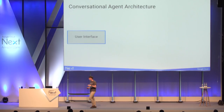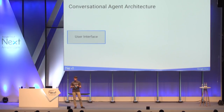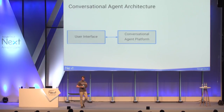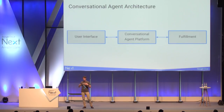Let's look at the basic architecture. This architecture works for both voice chatbots — like Amazon Alexa, Microsoft Cortana, or Google Home — and for text bots integrated on your website or mobile application. The three building blocks are: the user interface, the conversational agent platform, and the fulfillment side. We will go over them one by one.